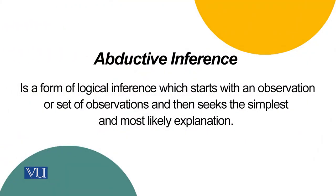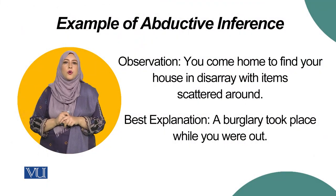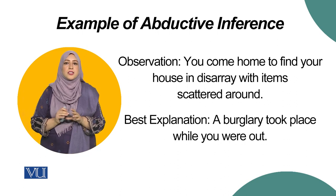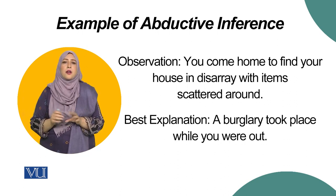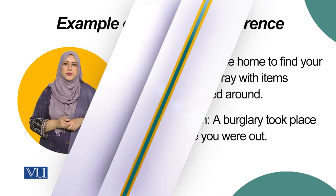The third type of inference is abductive inference, which is a logical inference that starts with an observation or set of observations and then seeks out the simplest and most logical explanation. For example, if you come home and find that your house is in a disarray and everything is scattered around, the only logical explanation is that there might have been a burglary.